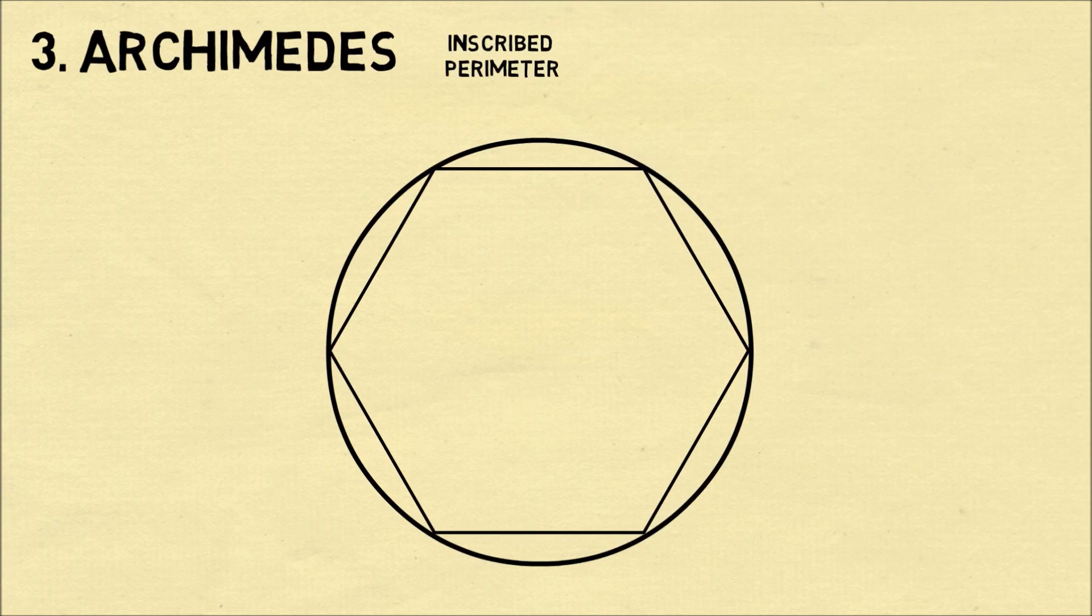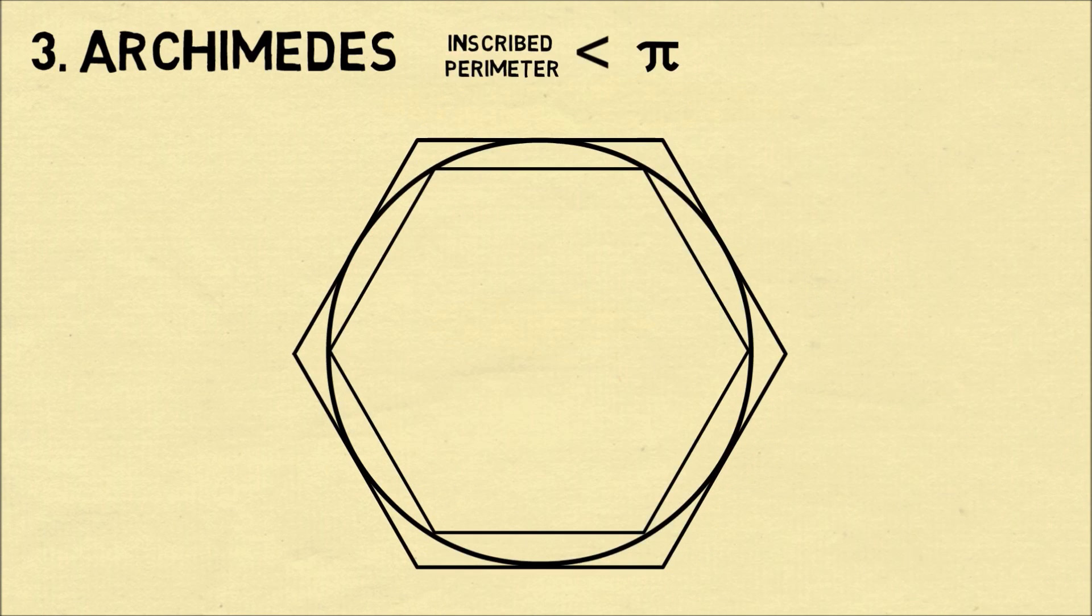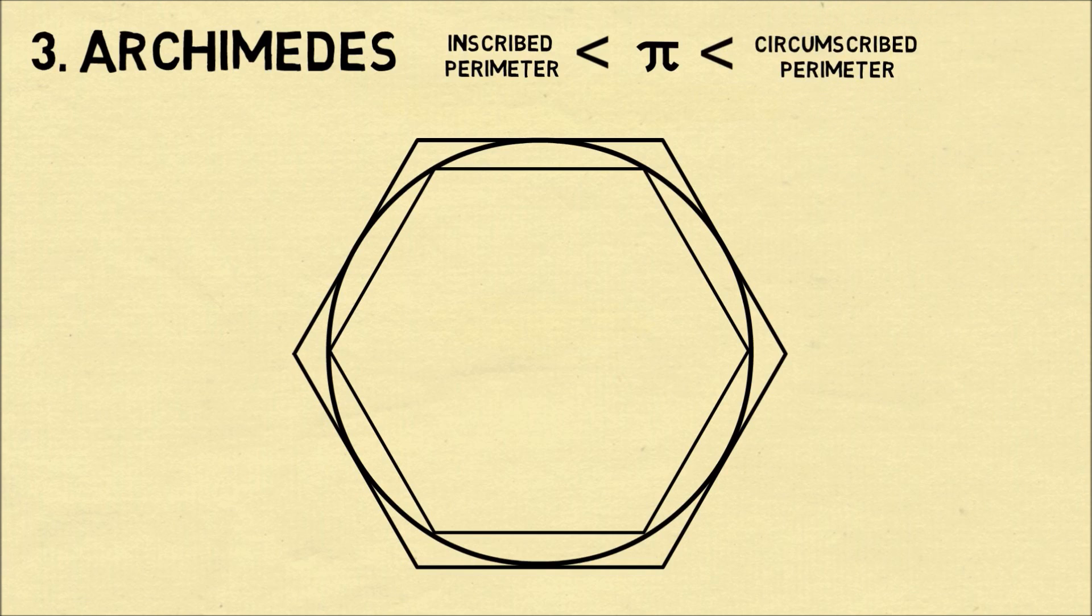The perimeter of this hexagon will be clearly less than the circumference of the circle, which is pi. Archimedes also considered drawing a hexagon around the circle. Now the perimeter of this hexagon will be larger than the circumference of the circle. So we can have an upper bound for pi.